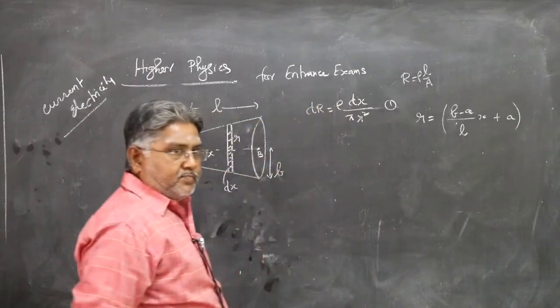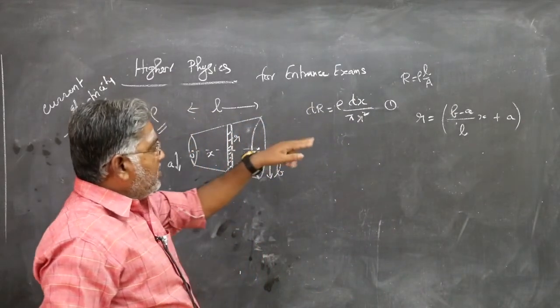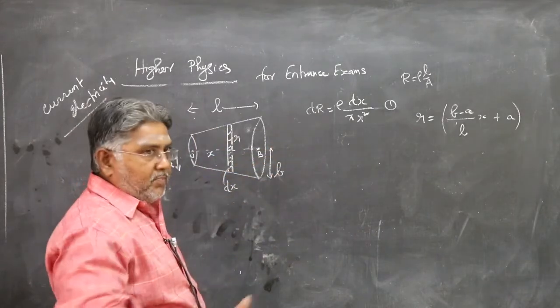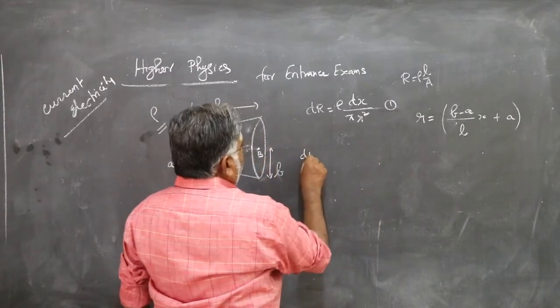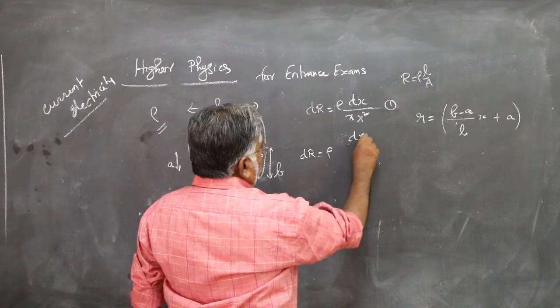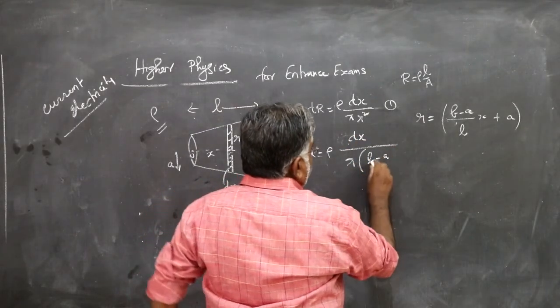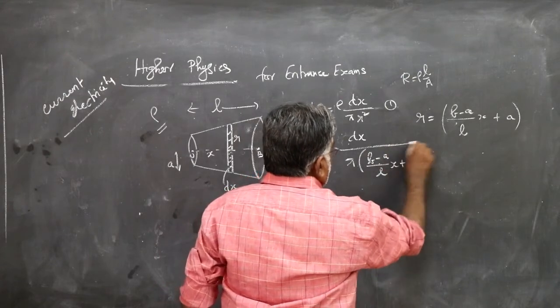So if you want to find actual radius, A plus the increase in radius. Starting from the radius A, the increase will be B minus A by L into x. So the actual radius R should be equal to A plus that. Therefore, dr equals rho into dx by pi (B minus A by L into x plus A) squared. This is the resistance of the element.